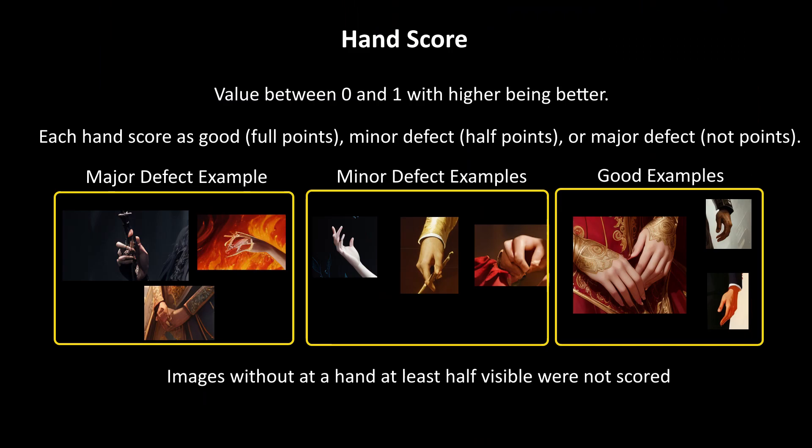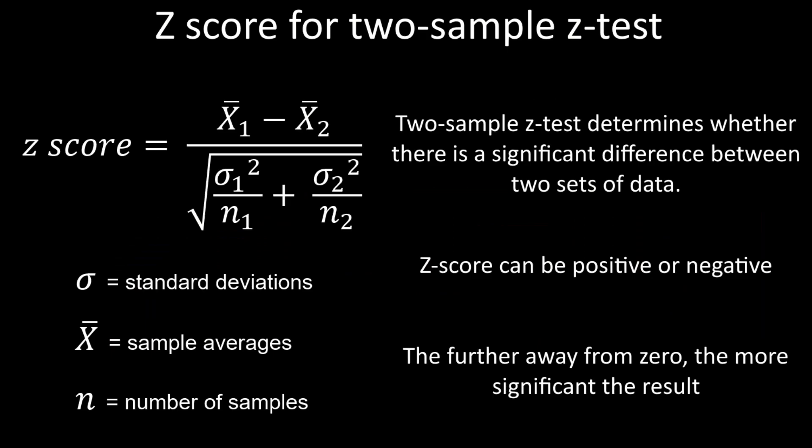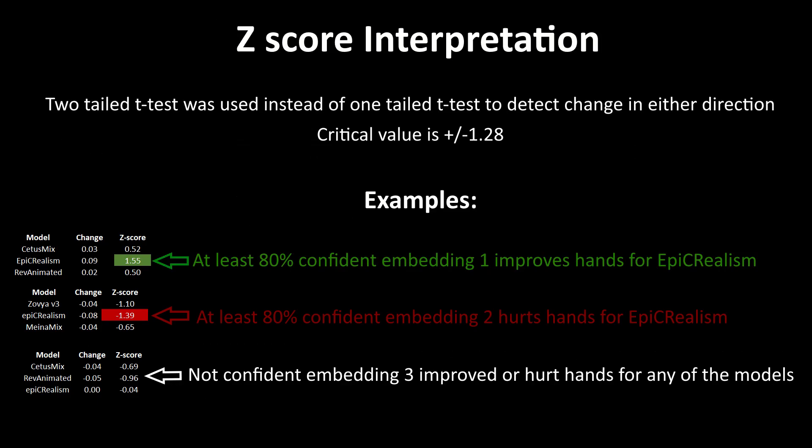Long story short, each dataset is given a score for hands between 0 and 1, with higher being better. Since I am testing the same models with different embeddings, I'll be showing the difference between the base score of the model and the score with that embedding, along with the z-score. The z-score is calculated with an intimidating-looking formula, but I will keep things simple. If the z-score is highlighted in green, we are at least 80% confident that it improved hands. And if it is in red, we are at least 80% confident it hurt hands. As a rule of thumb, the change needs to be more than 0.05 in magnitude to be significant.